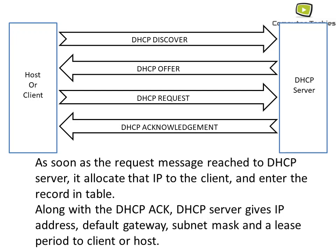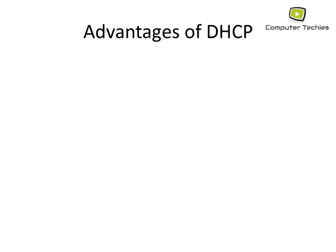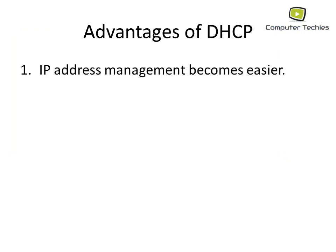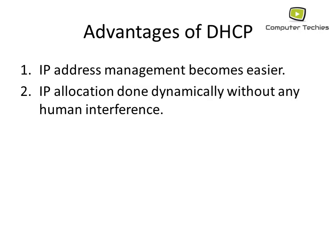Now let's look at the advantages of DHCP. First, IP address management becomes easier — once an IP is allocated to a host, the host name, IP address, and lease period are automatically entered into the DHCP table without any human interference. Second, IP allocation is done dynamically and automatically without any human interference — everything is handled systematically.